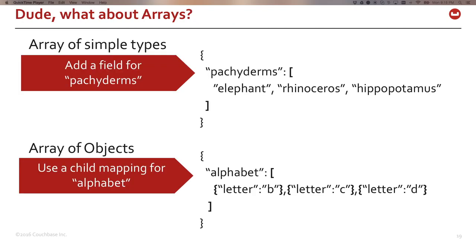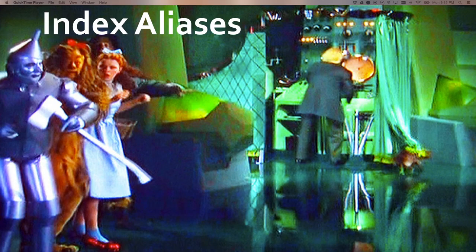If you know your JSON, you're probably asking yourself: what about arrays? For an array of simple types, you use a field mapping, like this array of strings. For an array of objects, you use a child mapping and then create fields. In other words, you just map it like the array isn't even there, and FTS works.